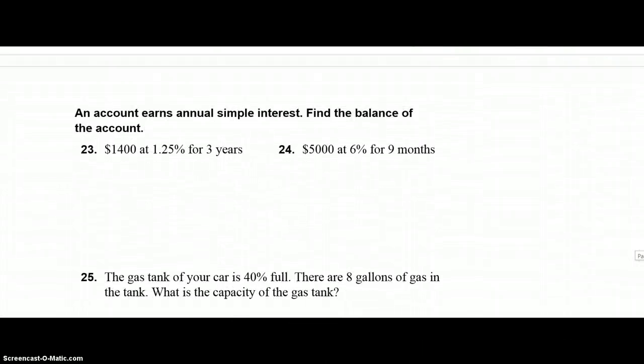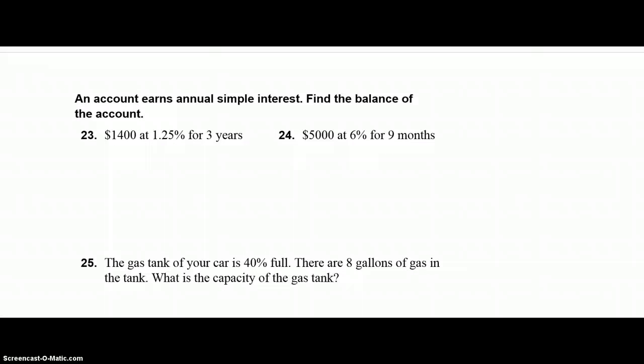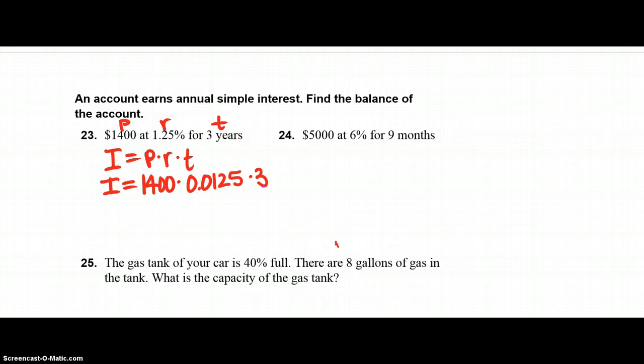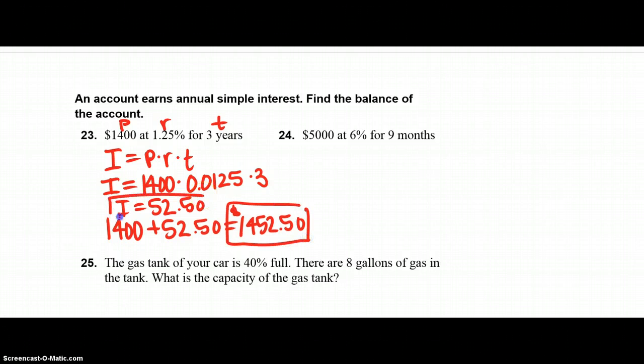Moving right along, an account that earns annual simple interest, find the balance of the account. So same thing, I equals P times R times T. This is P, this is R, this is T. So my interest is equal to 1,400 times this is the decimal, which is 0.0125 times 3. And if I do that in my calculator, I get $52.50. You need to take that interest and add it to your principal. So 1,400 plus 52.50, and that is equal to 1,452.50. So these are two part answers, the balance and also the interest earned.